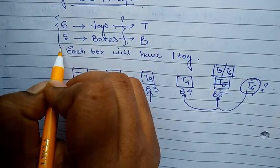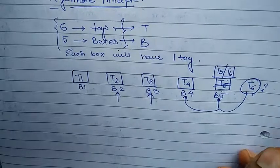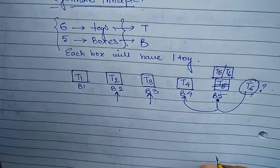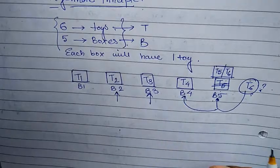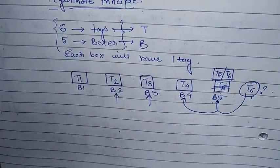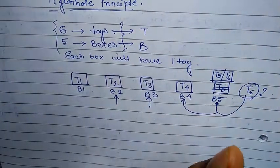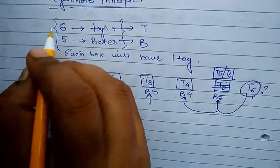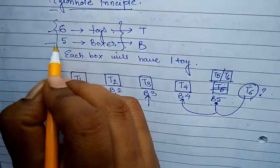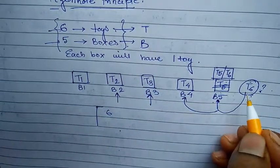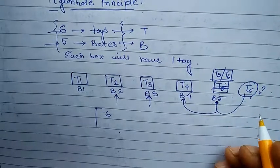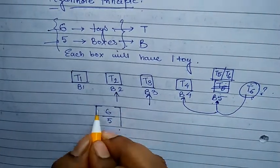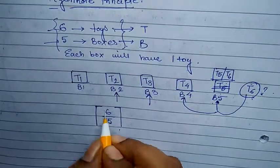Now, because I have a countable number of toys and a countable number of boxes, it is easy for me to draw the boxes and adjust them. But if I have a huge number — say 6 lakhs or 10 lakhs or 20 lakhs toys — and I have n number of boxes, how do I adjust that? There is a principle for this. Since I have six toys and five boxes, I am dividing the toys across the five boxes, trying to adjust them.